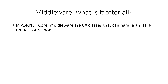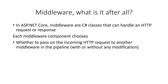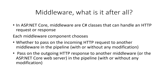In ASP.NET Core 3.1, middleware are C# classes that can handle an HTTP request or response. Each middleware component chooses whether to pass on the incoming HTTP request to another middleware in the pipeline, with or without any modification, and also pass on the outgoing HTTP response to another middleware or the ASP.NET Core web server — the final piece in the pipeline — again with or without any modification.